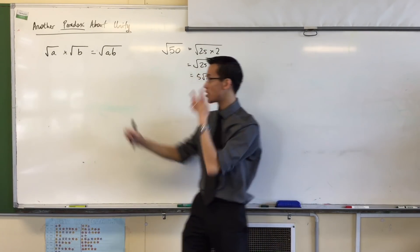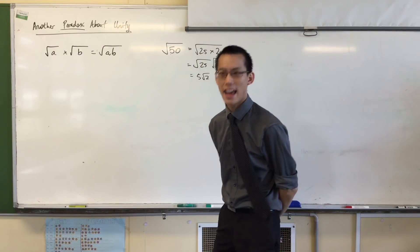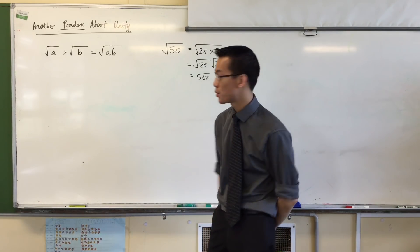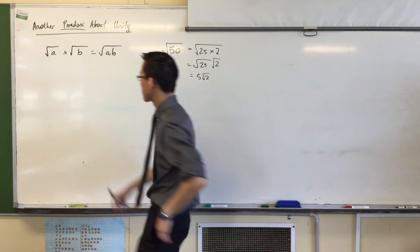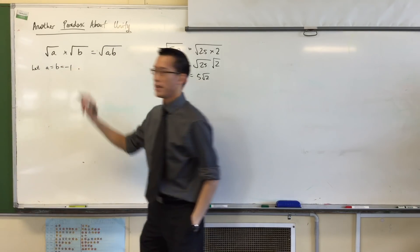Yeah, you happy with that? So, in fact, we do this loads, and so this is kind of an established idea. Okay, now's where it's going to get a bit tricky. So I'm going to try particular values of A and B. I'm going to say let A and B both be negative 1.